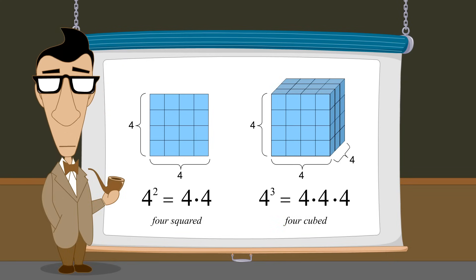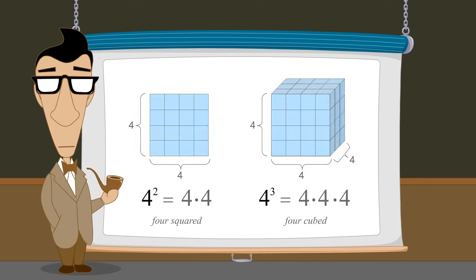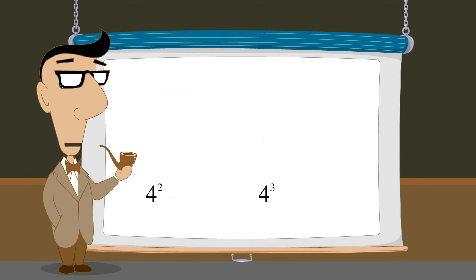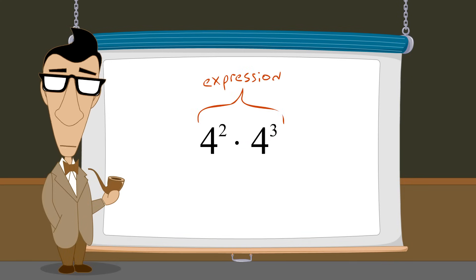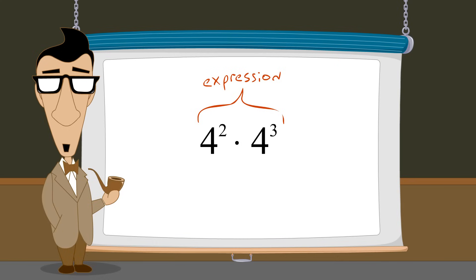Individual exponential expressions can be combined into larger expressions through operations such as addition, subtraction, multiplication, and division. For instance, we can multiply the two exponential expressions four-squared and four-cubed, creating a larger expression. We sometimes refer to these individual elements within a larger mathematical expression as terms.